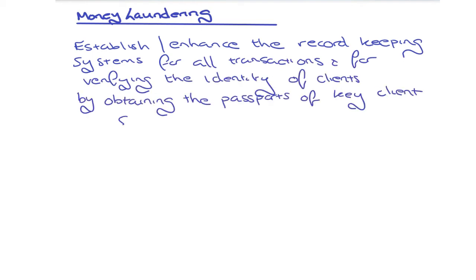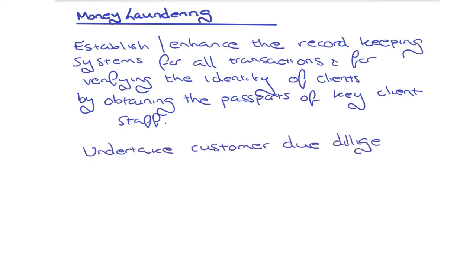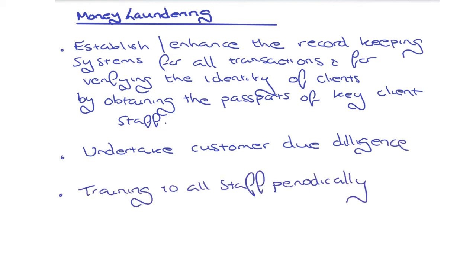Other practical measures include establishing or enhancing record-keeping systems for all transactions and verifying the identity of clients by obtaining passports of key client staff. Firms can also undertake customer due diligence — for example, implementing a checklist to ensure compliance with money laundering regulations when taking on a new client or reviewing an existing one. Regular and mandatory staff training should also be carried out periodically.